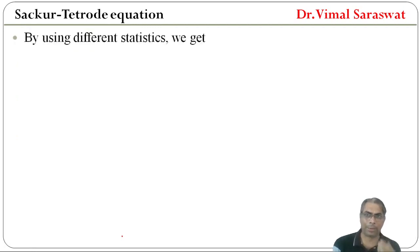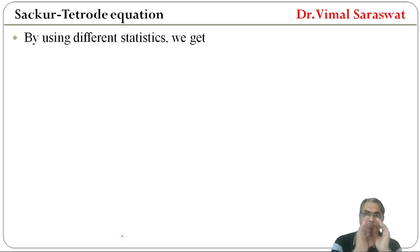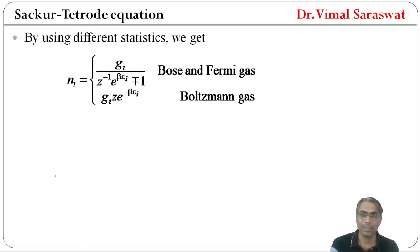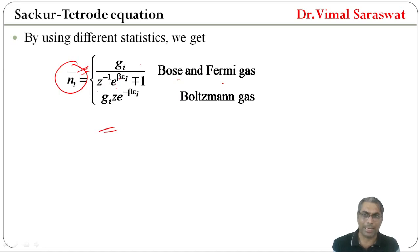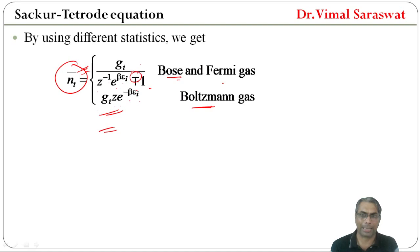By using different statistics, for Bose-Einstein, Maxwell-Boltzmann, and Fermi-Dirac statistics, we get the expression for N-bar-i. For Bose and Fermi gas it is Gi divided by (Z^-1 · e^(βEi) ∓ 1), and for Boltzmann gas it is Ni-bar = Gi · Z · e^(-βEi).